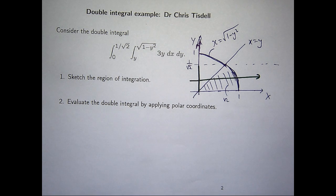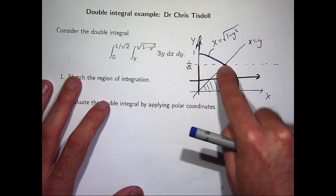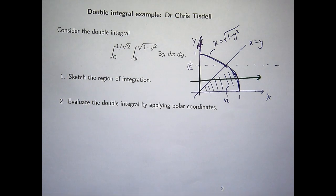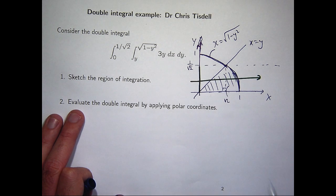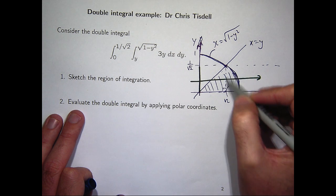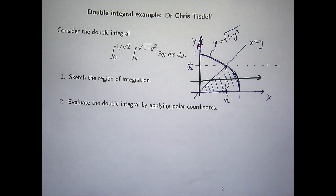To confirm that y equals 1 on root 2 and the line x equals y actually connect at a point on the circle, that's not too hard using a bit of algebra. You can also think of it as forming a little right-angled triangle. The radius is 1, so by Pythagoras, both legs must be 1 on root 2. So it's straightforward to justify that the line y equals 1 on root 2 and the line x equals y all meet at a point on the circle.